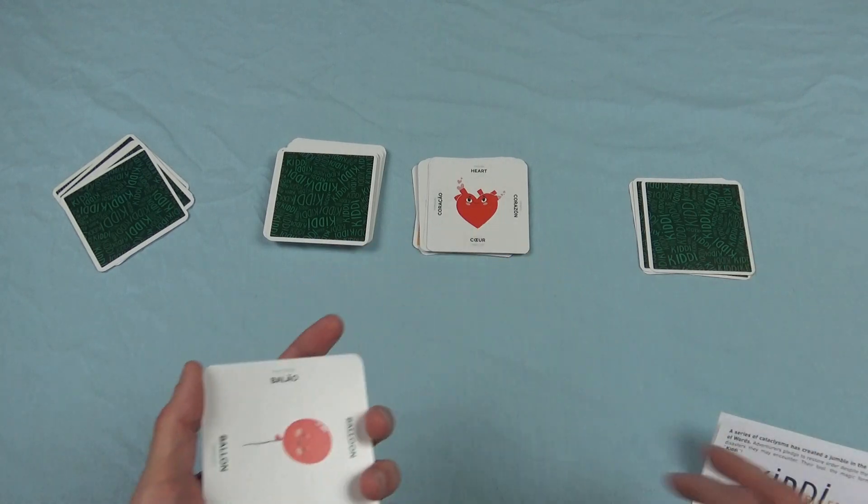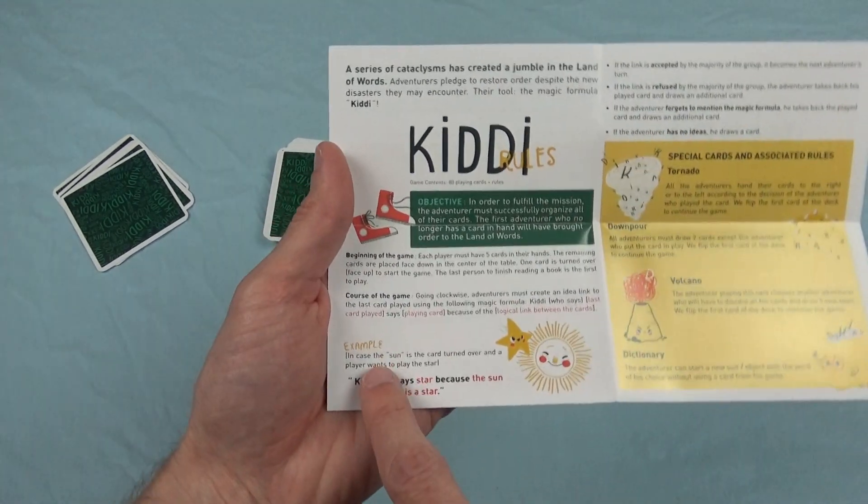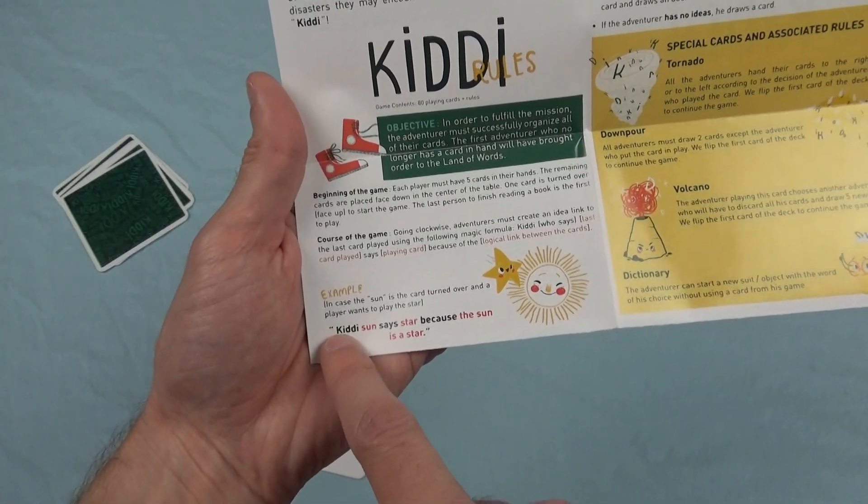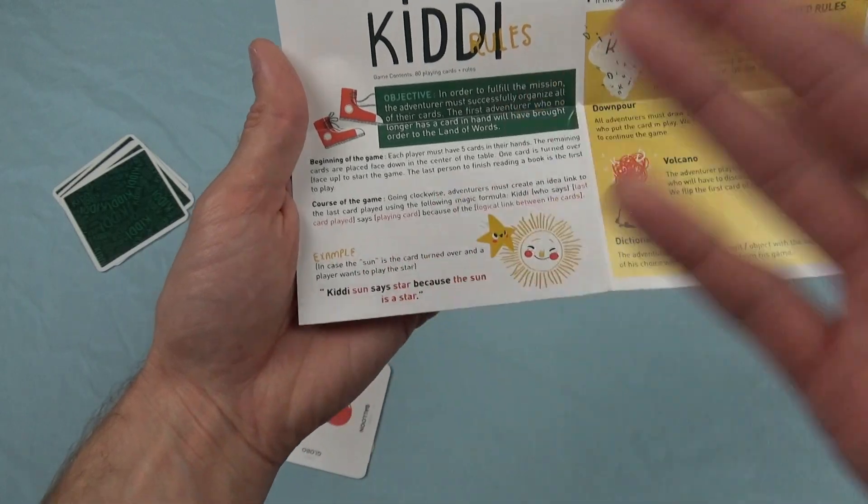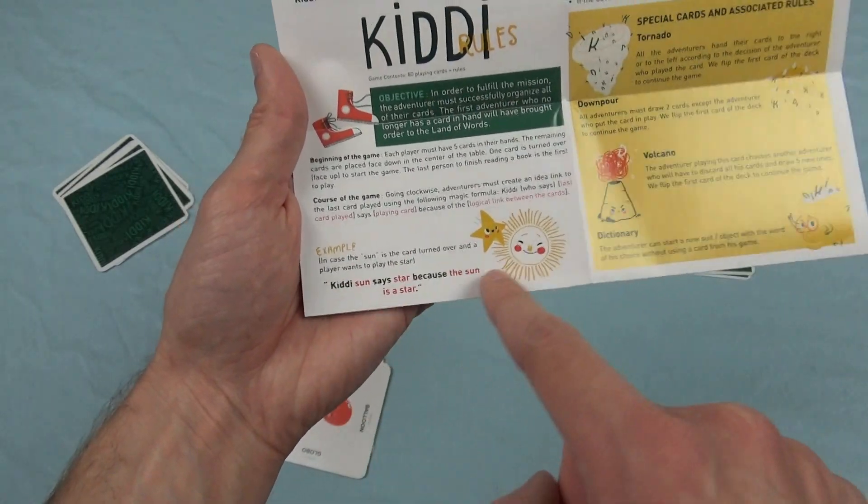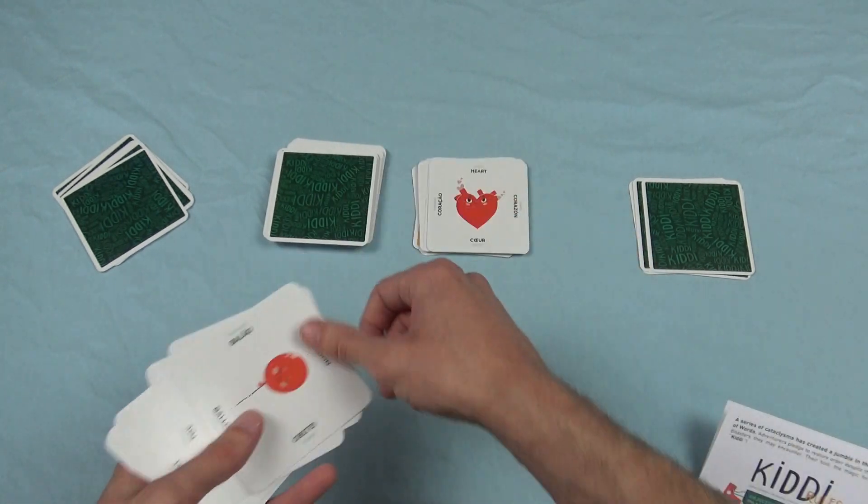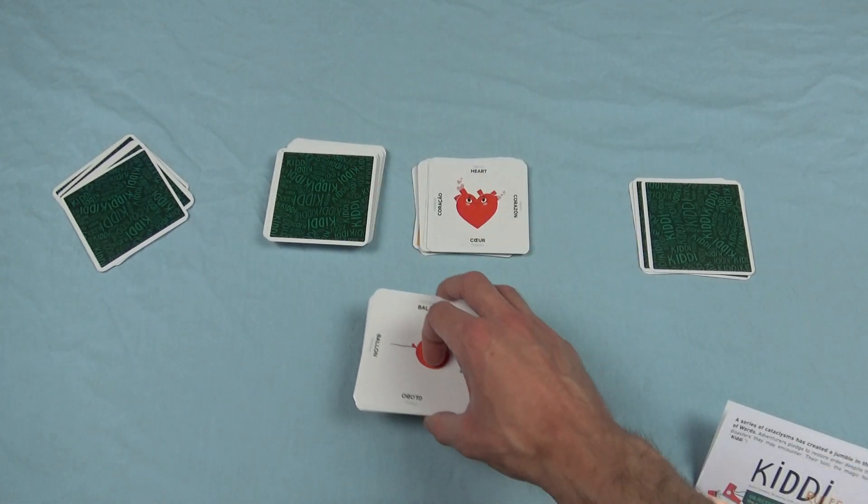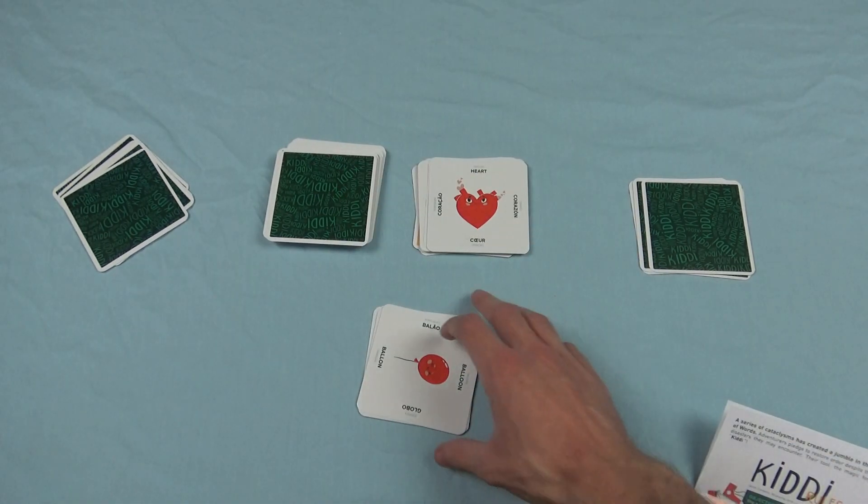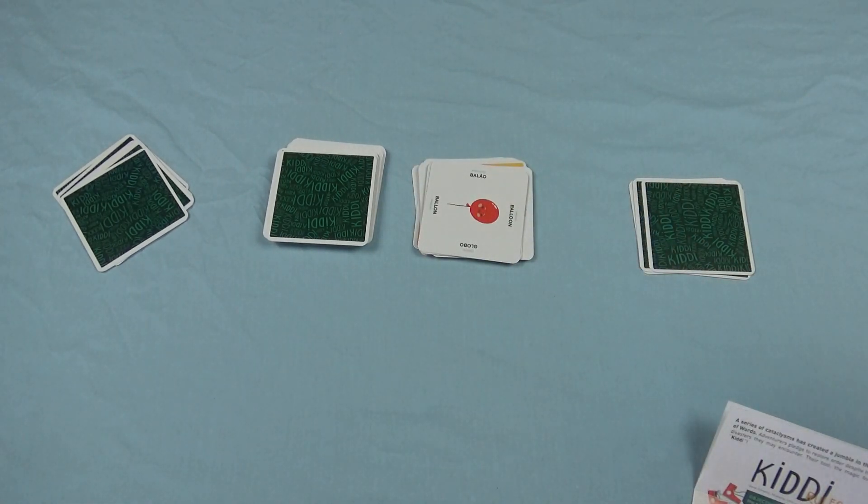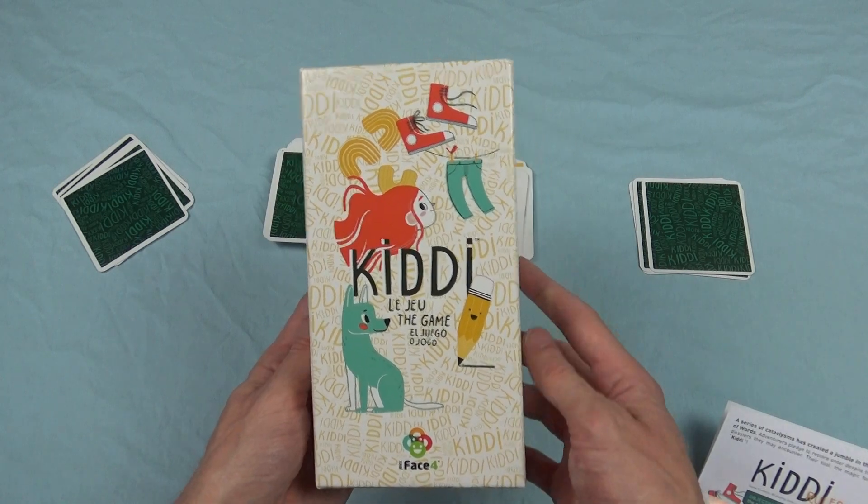If you forgot to say the magic formula, Kidsy sun says star. If you forgot to say Kidsy, or you said like, no matter what, if it's wrong, then you simply take your card back and take a new card. So that's it. Whoever gets rid of all the cards wins the game. And that was a quick presentation of the game Kidsy, the game.